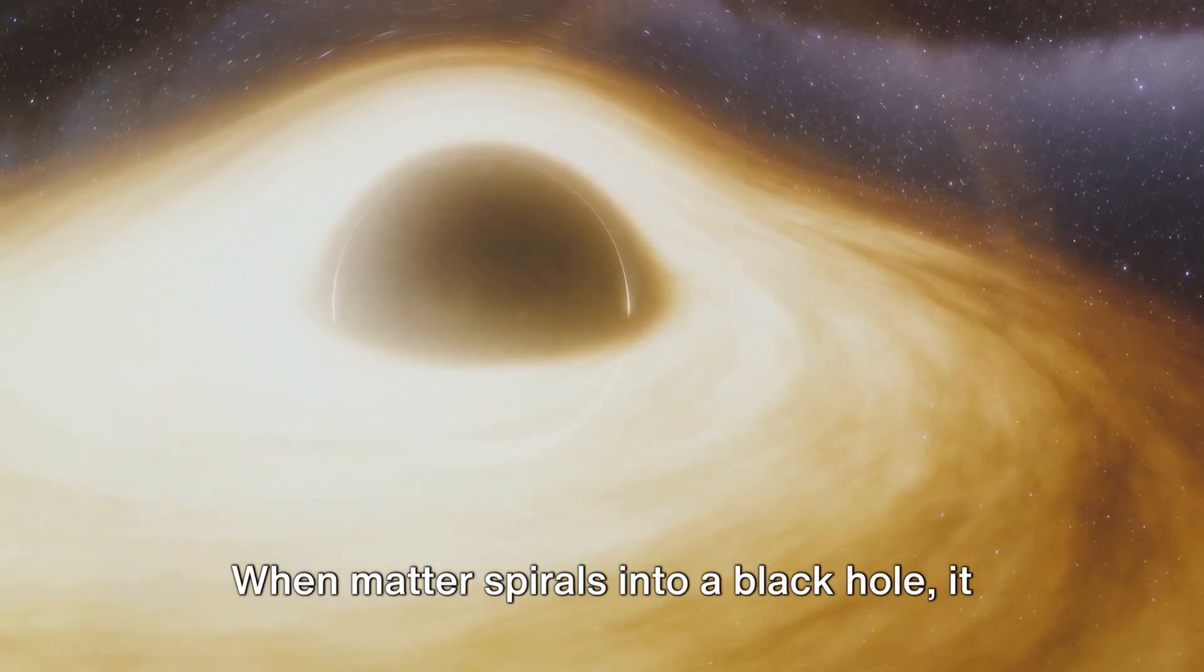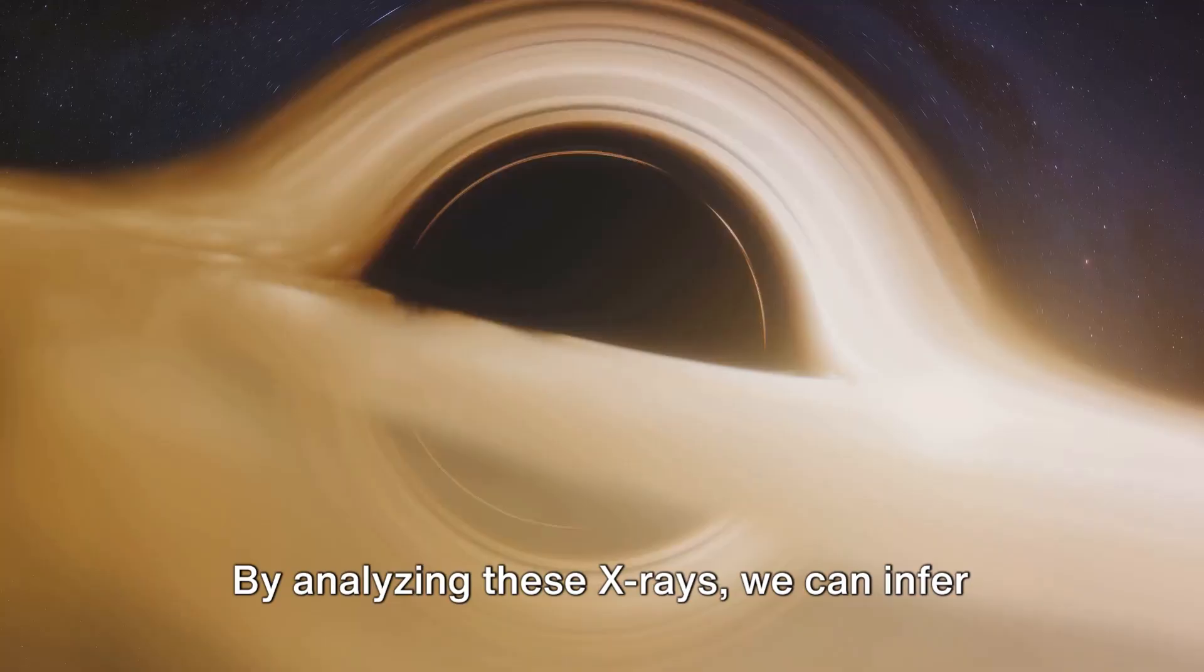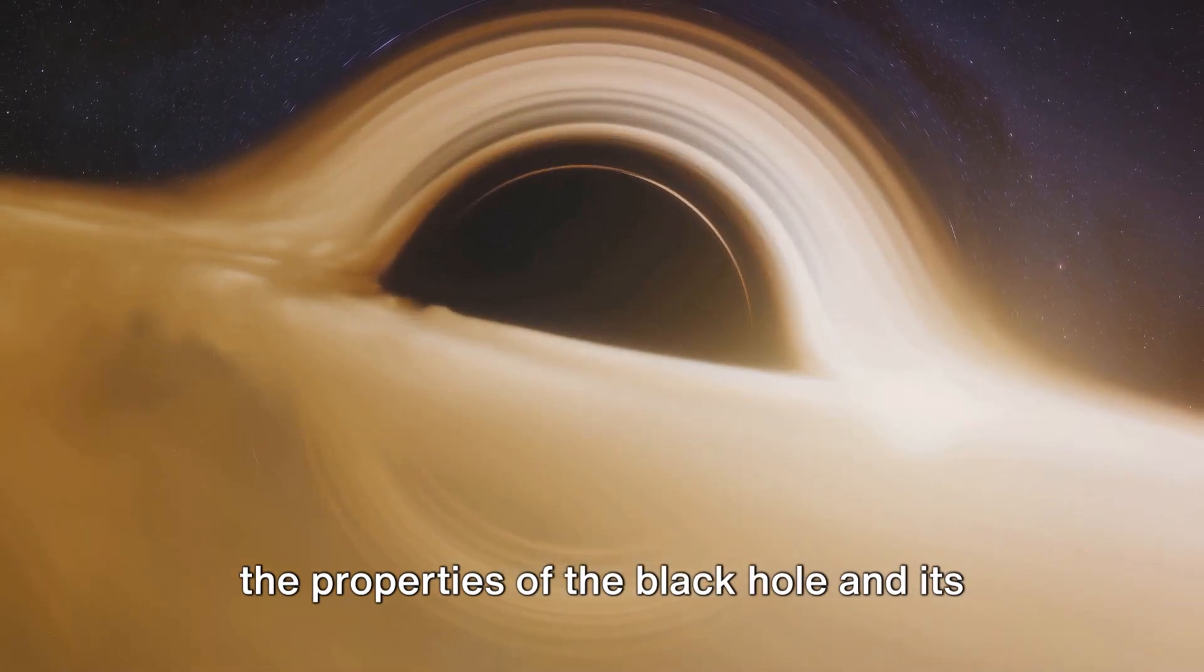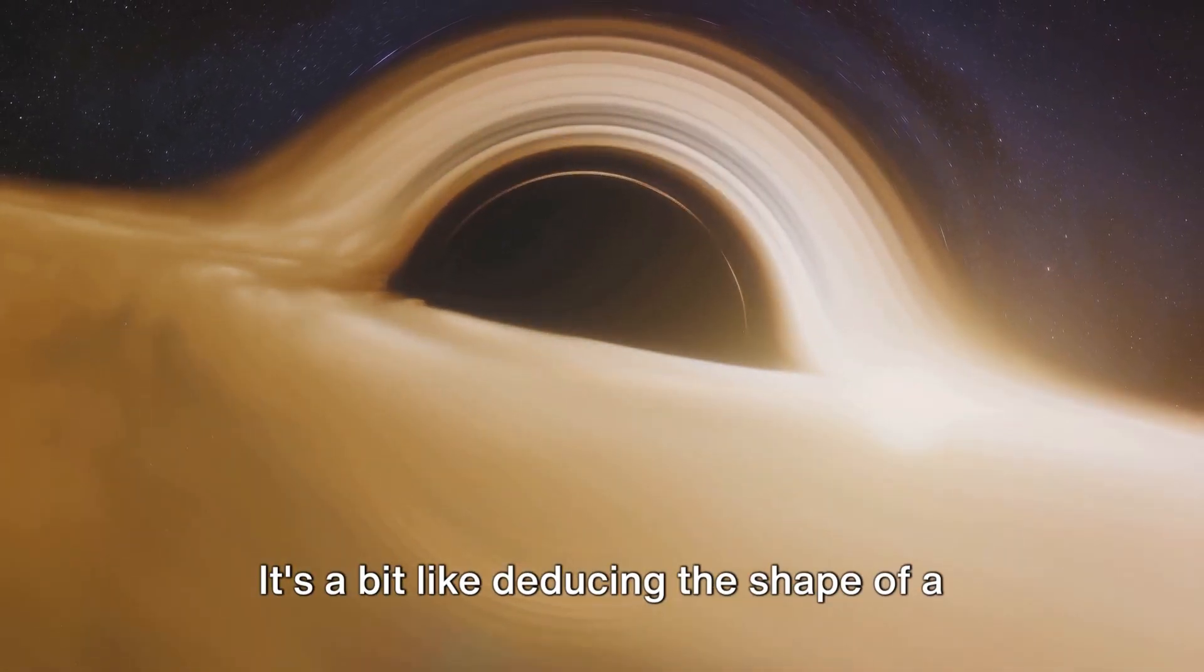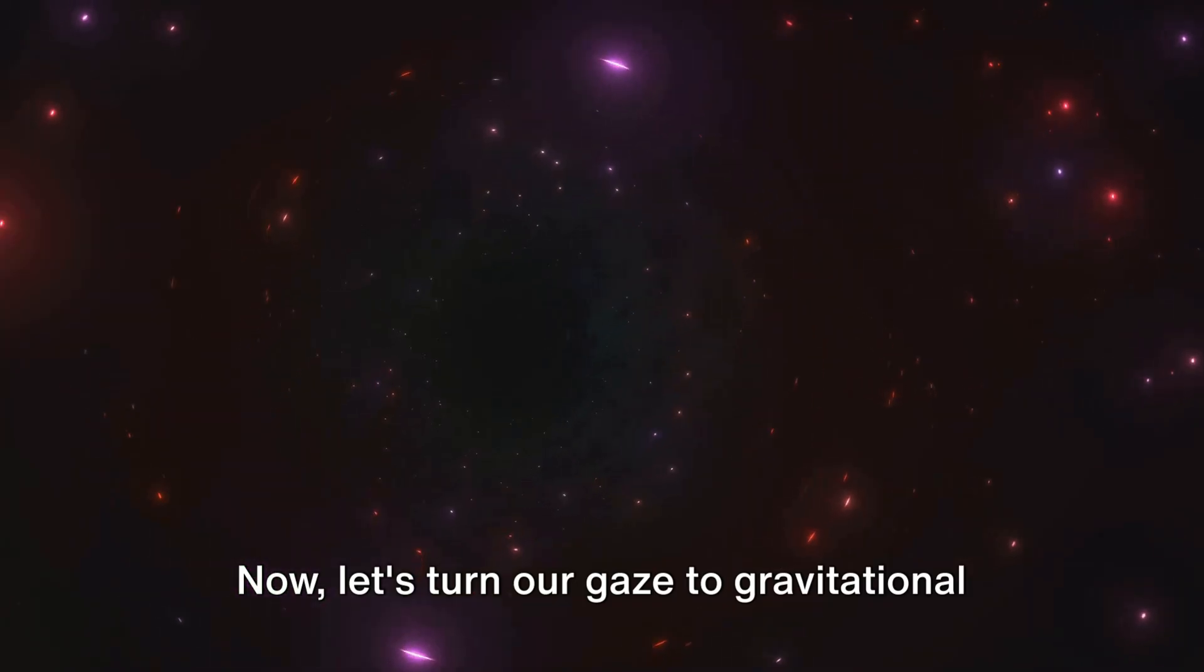When matter spirals into a black hole, it heats up and emits x-rays. By analyzing these x-rays, we can infer the properties of the black hole and its event horizon. It's a bit like deducing the shape of a whirlpool by observing the water's movement.